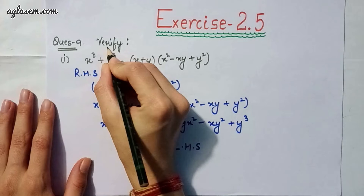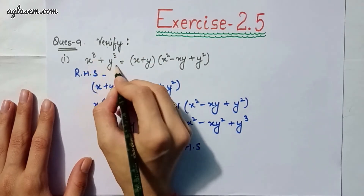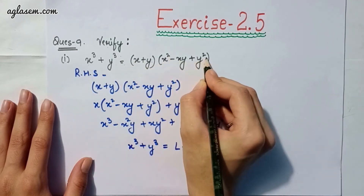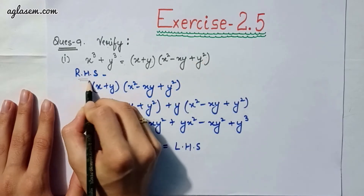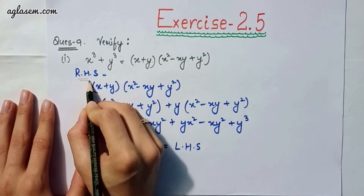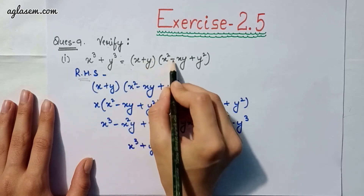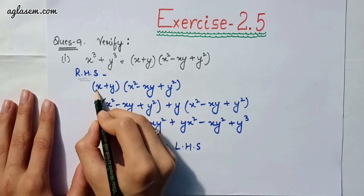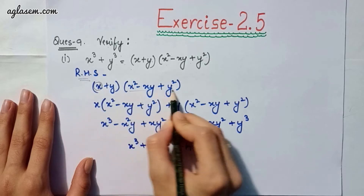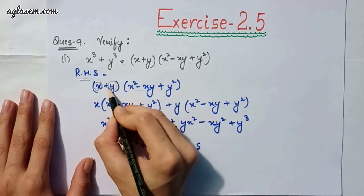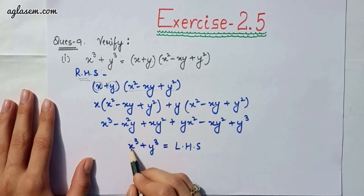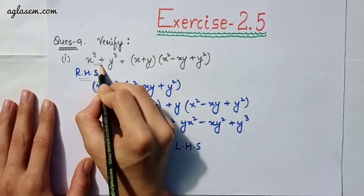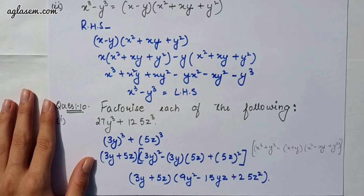Question 9, part one says verify: x³ + y³ = (x + y)(x² - xy + y²). First we take the right hand side, which is (x + y)(x² - xy + y²). We multiply x by the whole bracket and then y by the whole bracket, and our answer will be x³ + y³, which equals the left hand side. So it is verified.